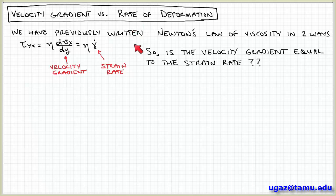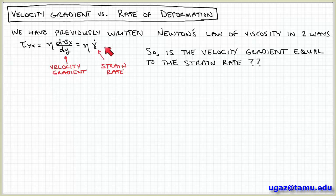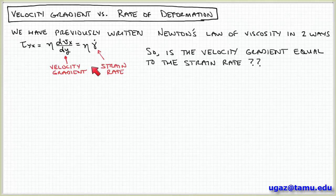You may remember from a previous video when we talked about Newton's law of viscosity, we introduced this parameter called the strain gamma and the strain rate gamma dot. And I told you that this quantity can represent deformations and rates of deformations in a material, and that this is more of a general way to express deformations and rates of deformations as compared with the velocity gradient.